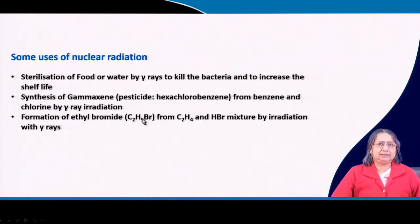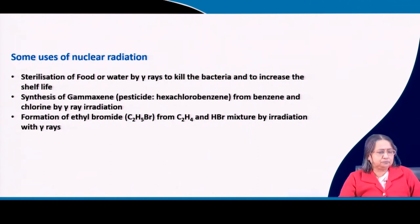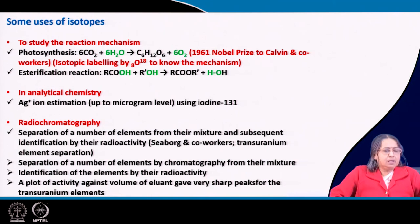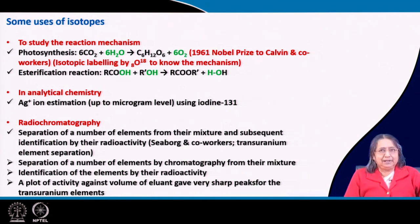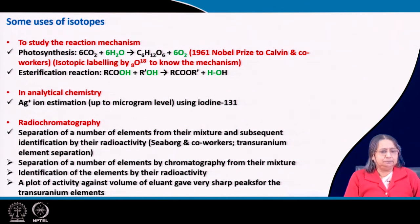Another application is the formation of ethyl bromide (C₂H₅Br), produced from ethane and HBr. You take a mixture of ethane and HBr — it is an addition reaction across a double bond — then irradiate it with gamma rays and ethyl bromide is formed. There are many other reactions; these are just a few selected examples of the uses of nuclear radiations. Uses of isotopes — note this is not necessarily radioisotopes — is the next application area.